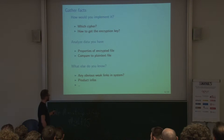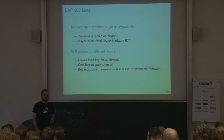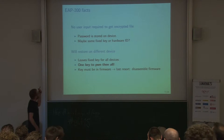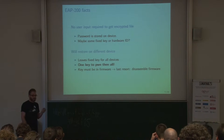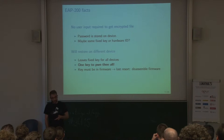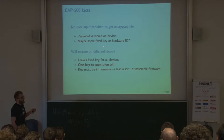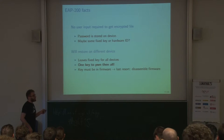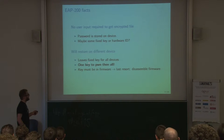We broke it, then told them it was broken, and they had to fix it. All they told us was they informed the department in Asia about the issue. With the EAP200 access point, we found that if you download the encrypted configuration file it does not ask for a password, and it's restorable on a different device. So it's either a fixed key in the firmware, or a hardware ID. If it were a hardware ID, you could only restore on the same device — not a different one.